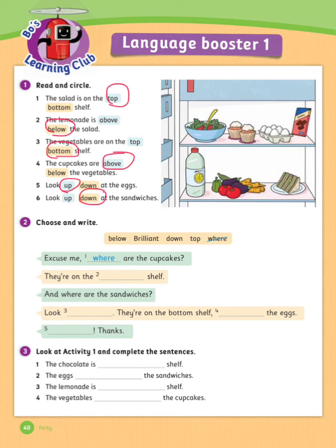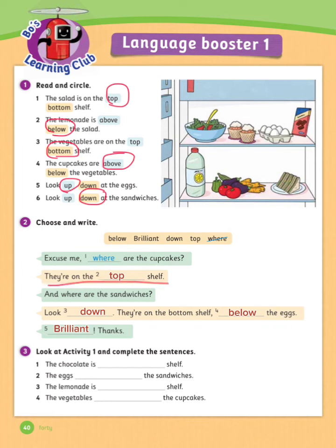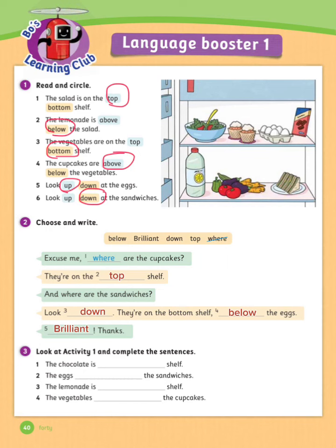Exercise number 2: Choose and write. Fill in the blank using the words in the box above. Let's see the answers. Excuse me, where are the cupcakes? They are on the top shelf. And where are the sandwiches? Look down — they are on the bottom shelf, below the eggs. Brilliant, thanks.